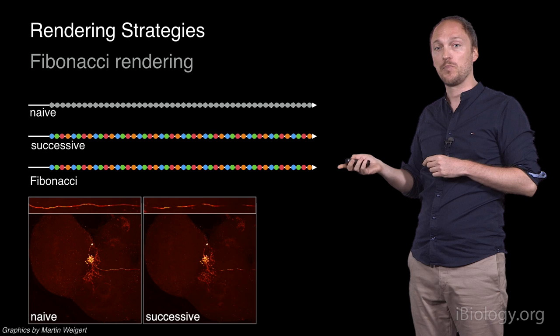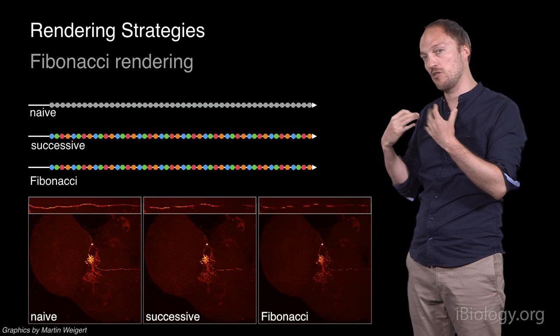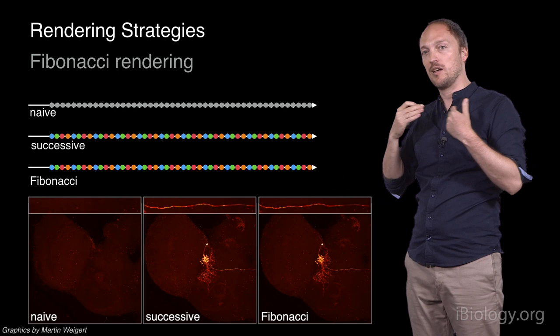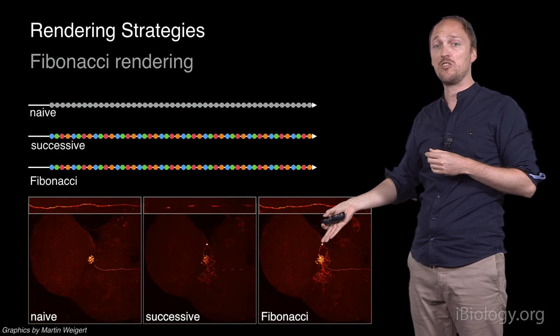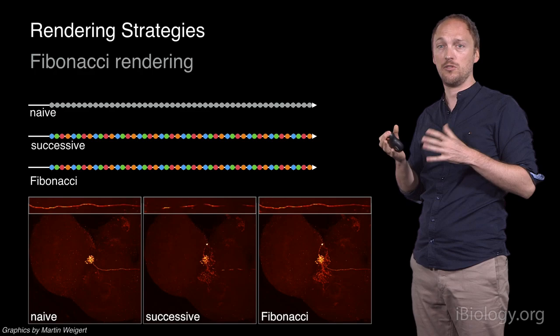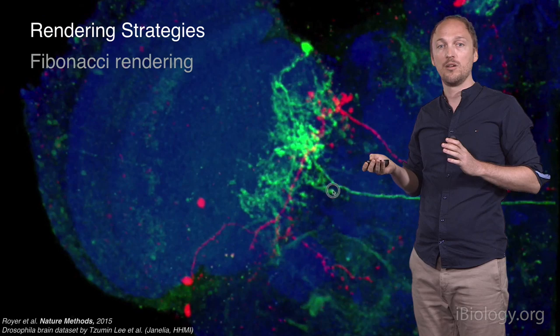And so, this technique, as you can see here, leads to essentially less perception of blinking or flashing. As you can see here, the naive approach is very slow, so it takes a long time to get the image, so it's not going to be interactive. But in the case of the Fibonacci approach, the image after a few passes is already of quite good quality.